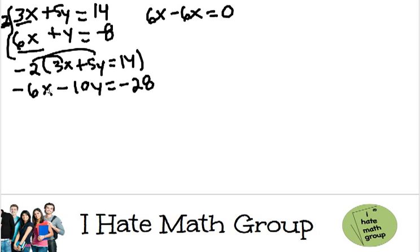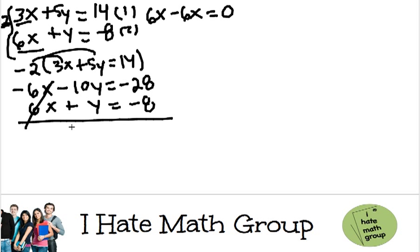Basically, I'm just rewriting the equation. I'm going to call this equation 1 and this equation 2. I'm going to put equation 2 on the bottom: 6x plus y equals negative 8. Now that I have this, 6x minus 6x will eliminate.